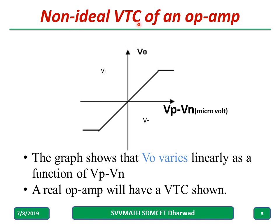On the voltage transfer curve, ideally when the input increases the output should also increase, but this is true only up to a certain extent because the output will reach either plus V saturation or minus V saturation. Up until that point, the output increases as the input increases.